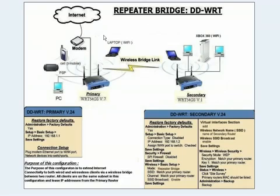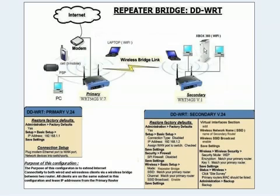This is the continuation to my intro, and this is actually the configurations of a repeater bridge. As a recap, the repeater bridge consists of an internet connection, a modem, a router, and your second router. The second router has wired connections to two personal computers, and wireless connections such as the Xbox 360 and a laptop.